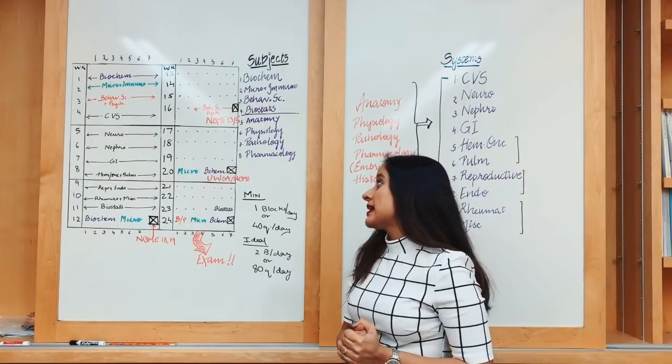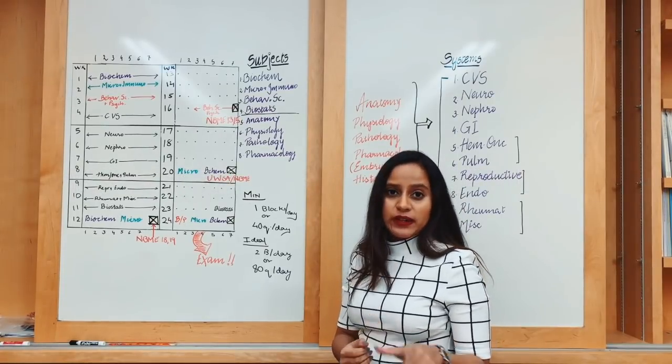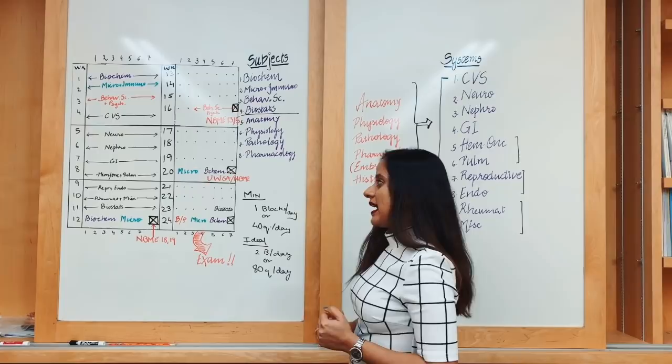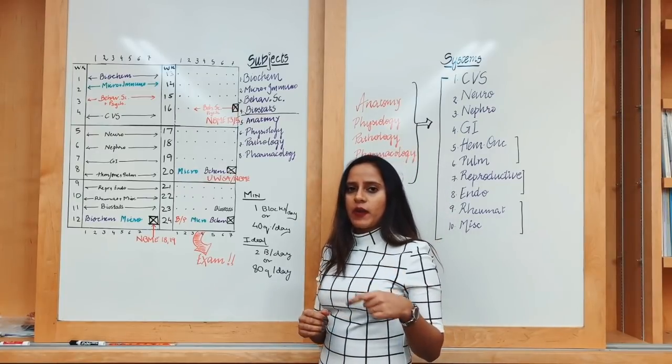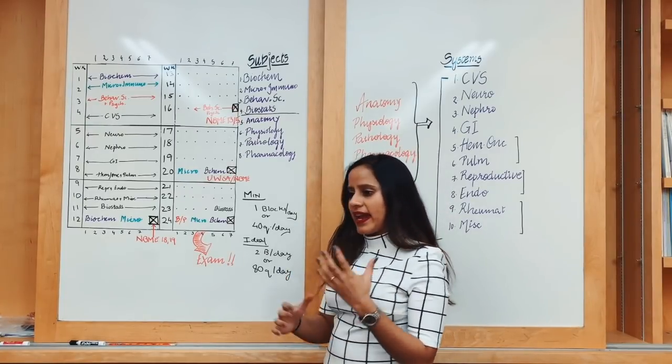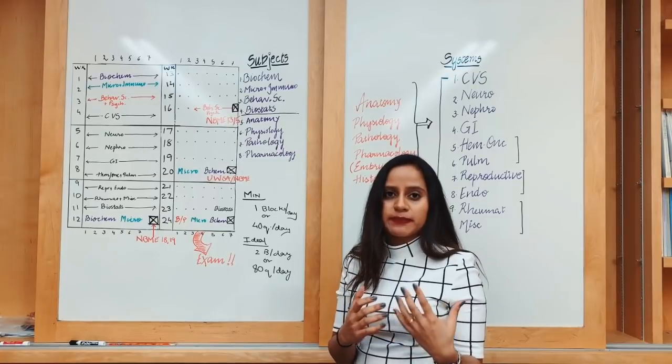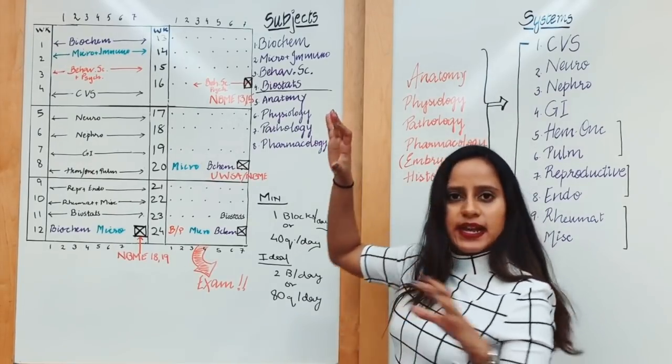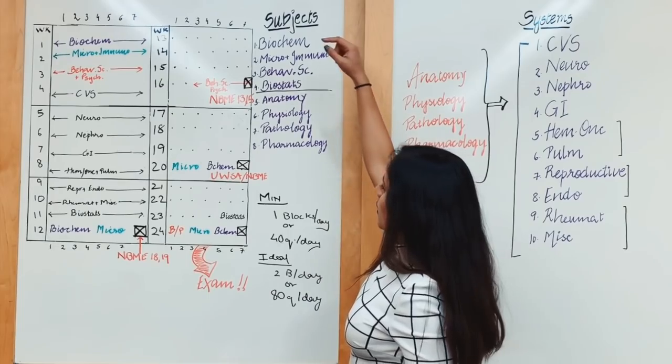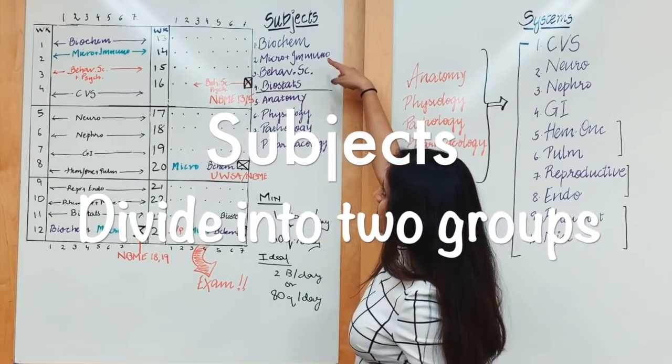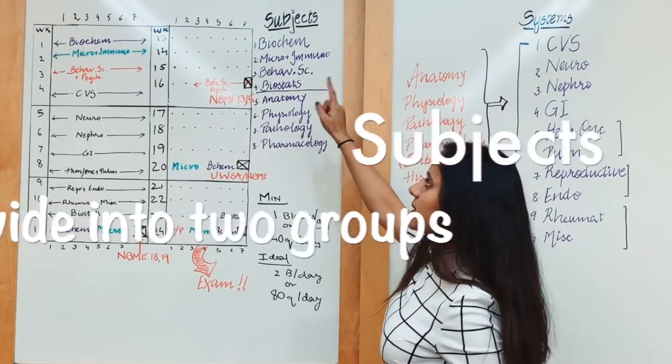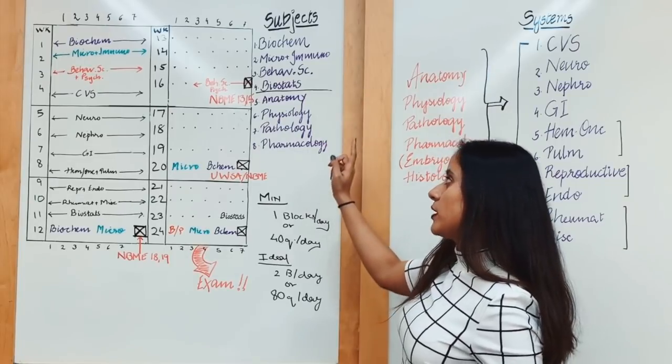I did a short video on how I went around biochemistry, and I have similar plans for other subjects. To give you a broad bird's-eye view, your subjects would be biochemistry, microbiology, immunology, behavioral science, biostats, anatomy, physiology, pathology, and pharmacology.